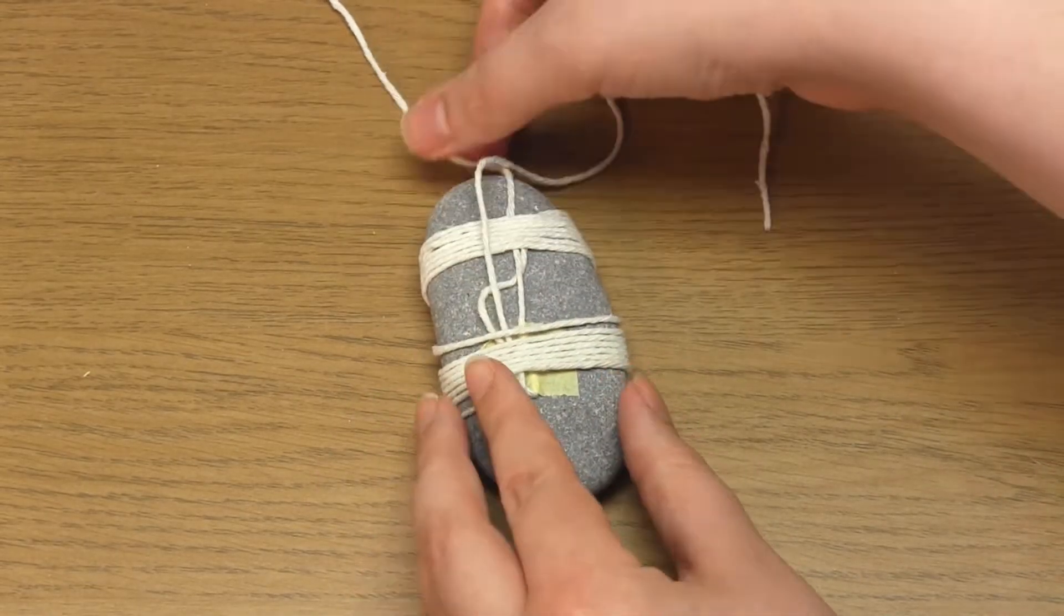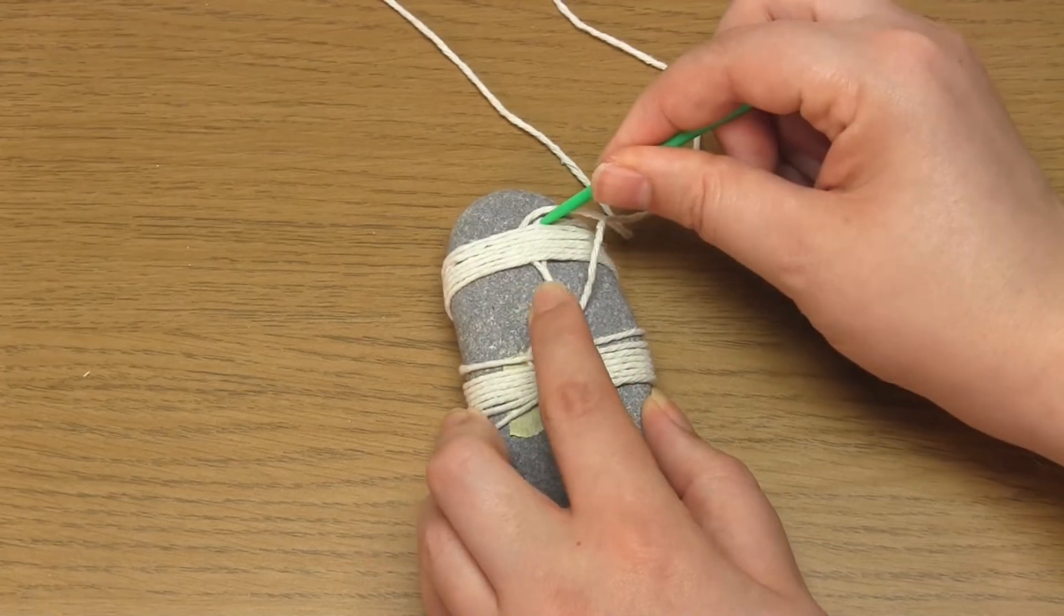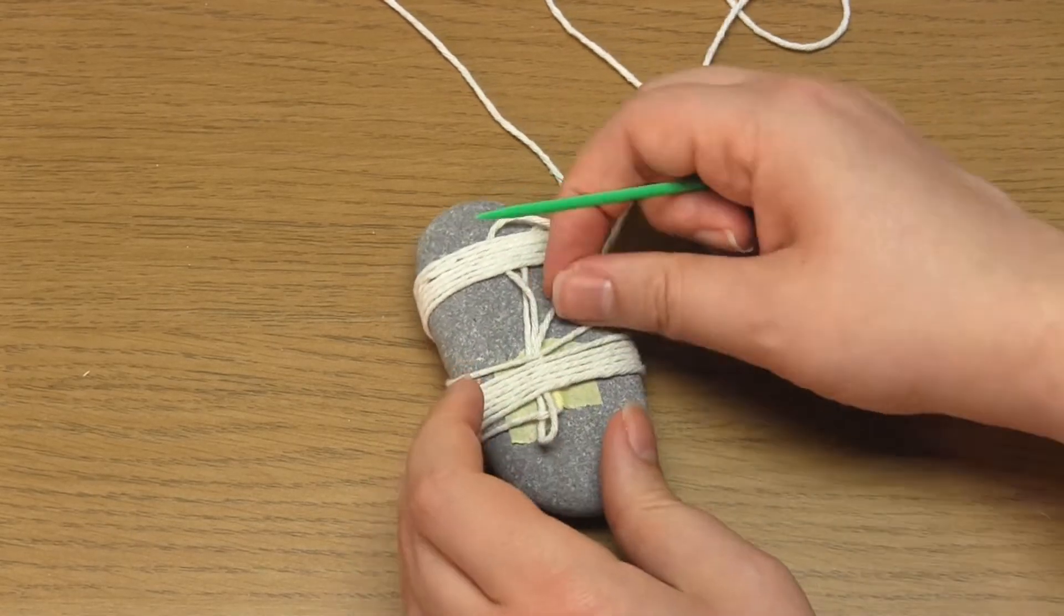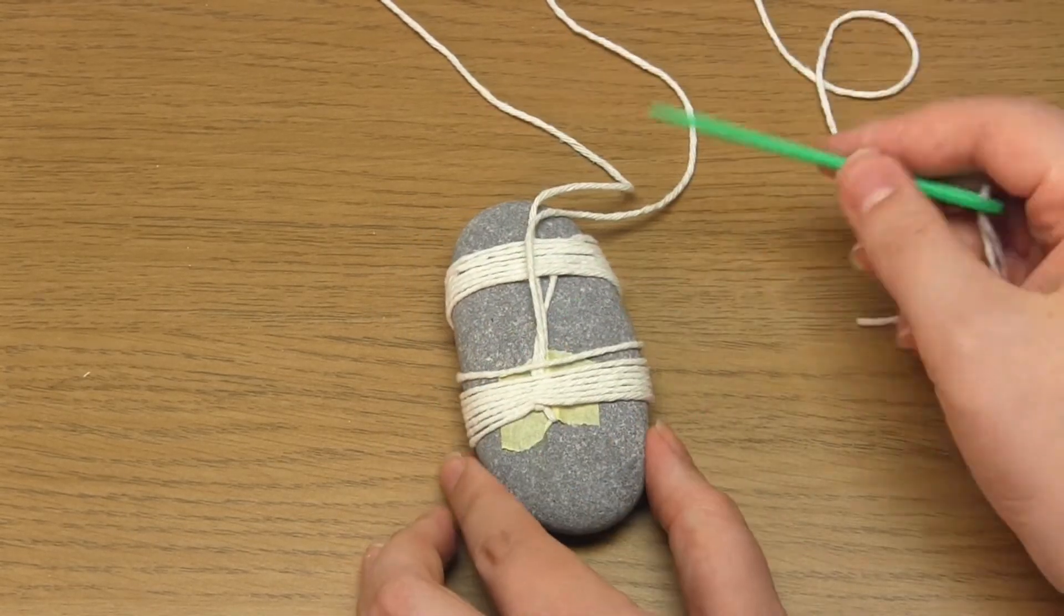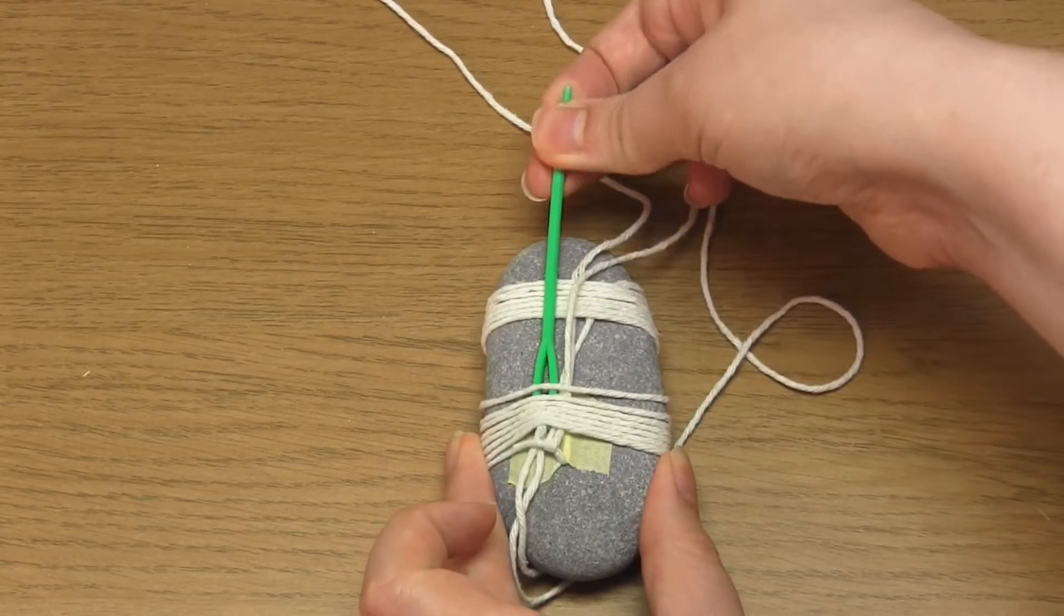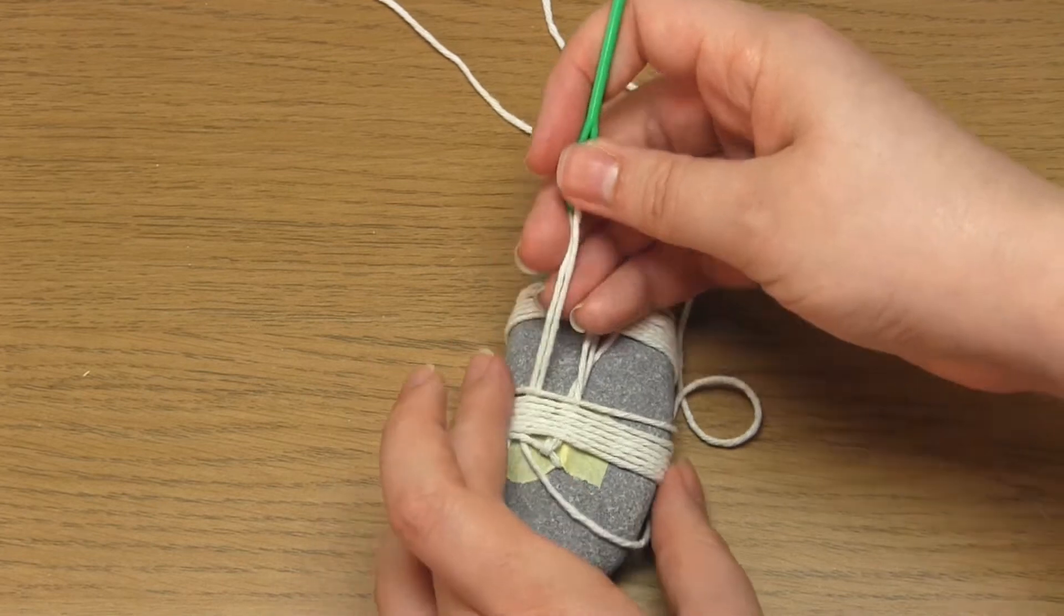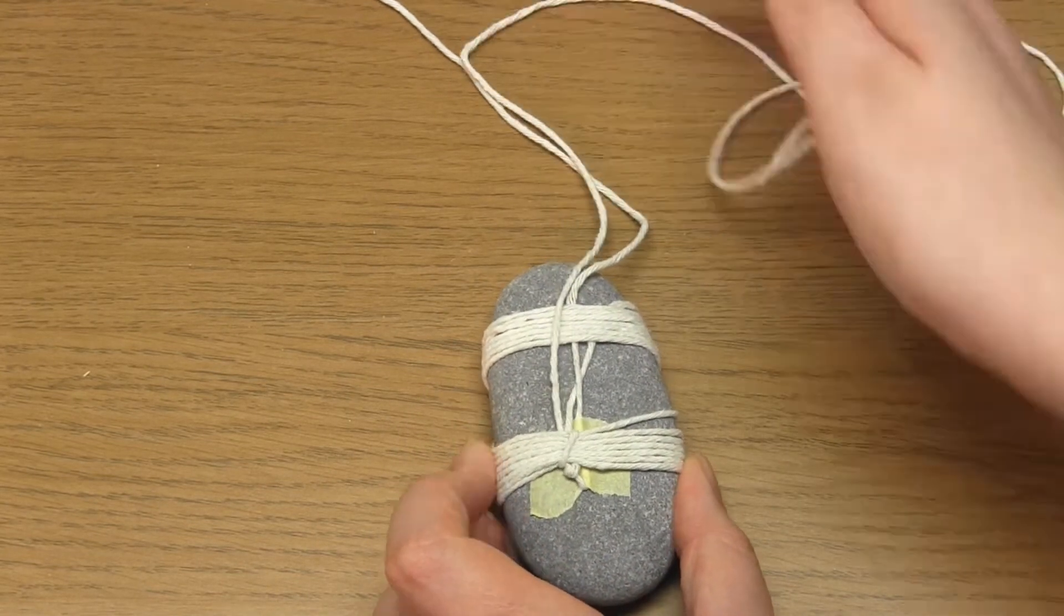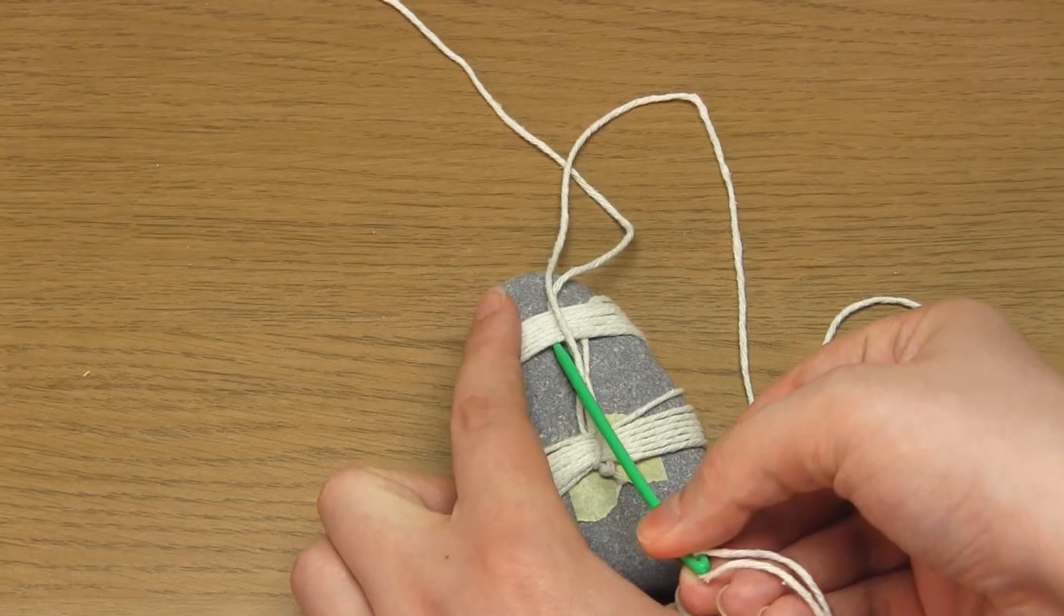Then just take a second to make sure all of the yarn strands are nice and neat. Then feed your needle up and under the lower band of yarn strands once more, including the lowest strand. Then up and under all of the strands in the upper band of yarn as well.